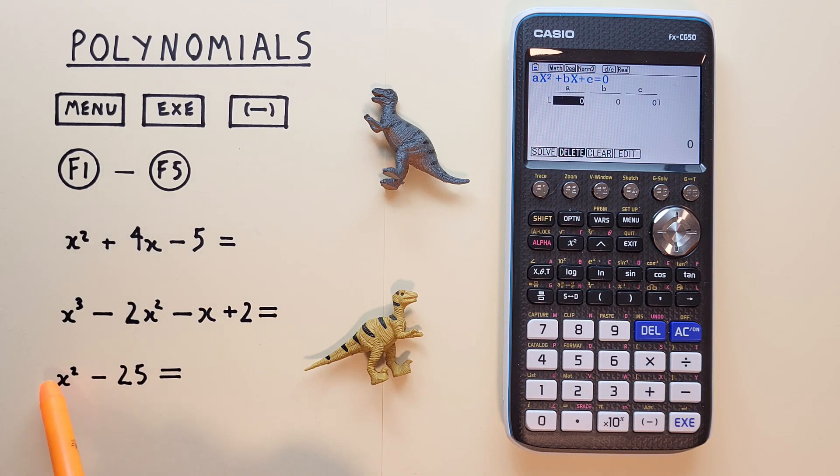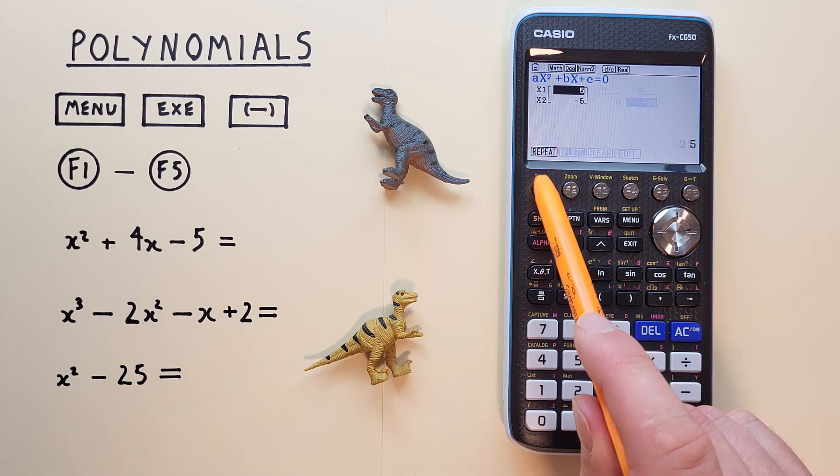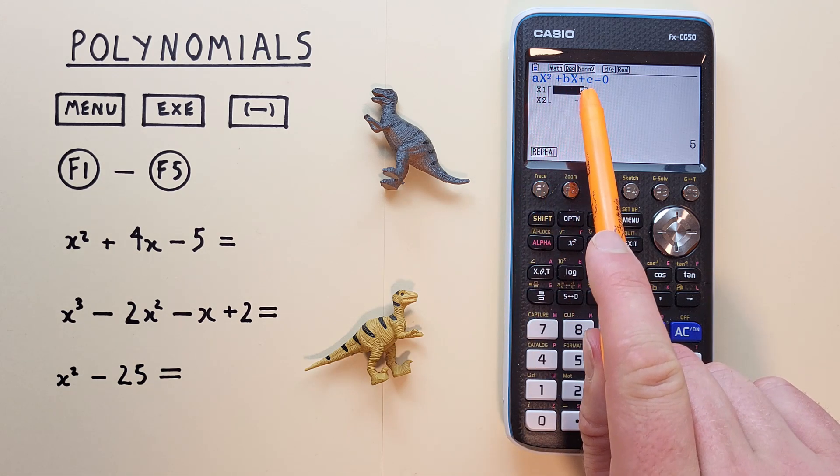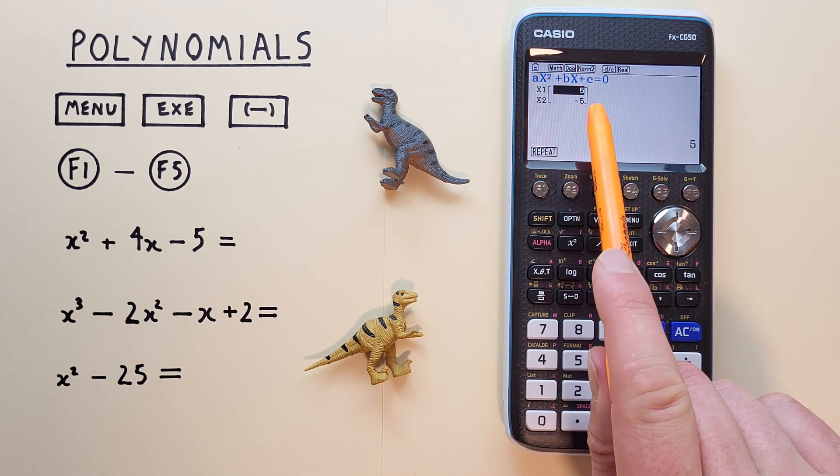And we have x squared. So we choose 1 for our a. And we have no x here. So we leave b as 0. Scroll over to c. And we have negative 25. And hit f1. Solve. And see, we get a result of x equals 5 or x equals negative 5.